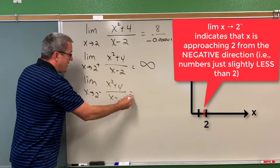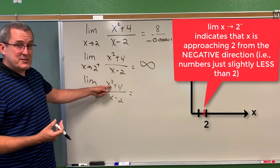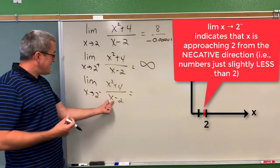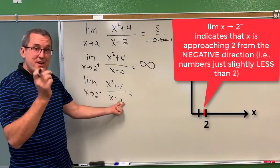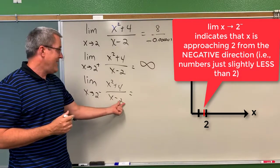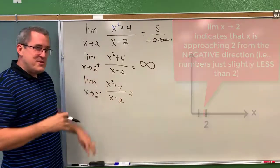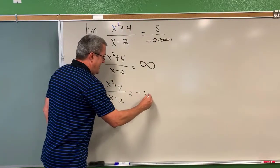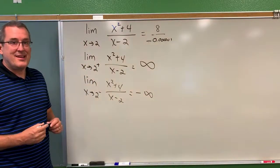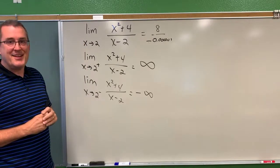And what we thought about is the numerator is still getting close to 8, but the denominator, taking something slightly less than 2 and subtracting 2, produces a very small negative quantity. And so when we think that through, the result is a very large but negative amount. So we say the limit would be blowing up to negative infinity.